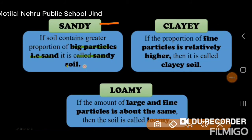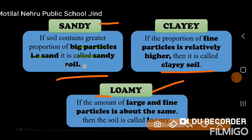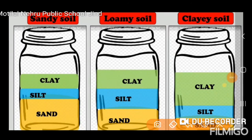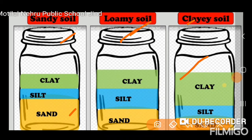First, sandy soil: if the soil contains a greater proportion of big particles, that soil is called sandy soil. If the proportion of fine particles is relatively higher, then it is known as clay soil. In loamy soil, the amount of large and fine particles is about the same — large and fine particles are equal. So in our sample: the bottom layer is sandy soil, the middle layer is loamy soil, and the last layer is clay soil, meaning clay content is more.